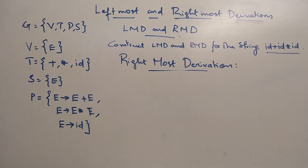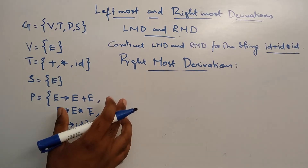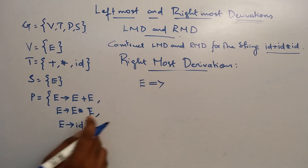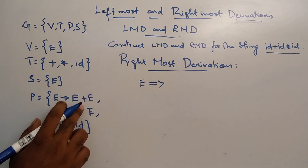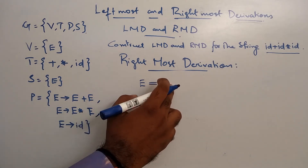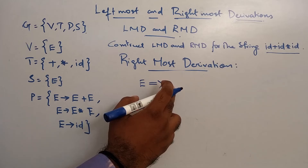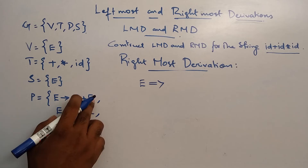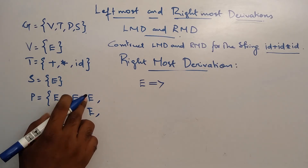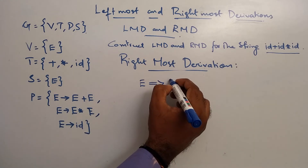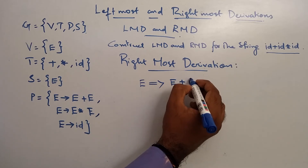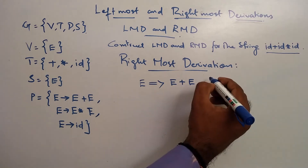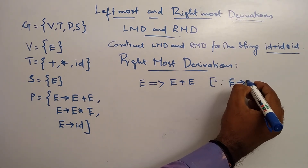Now we have rightmost derivation. When we start with derivation, we need to start with starting production E. E tends to — okay, more options are E plus E, E star E, or ID directly. So we can start with production E plus E, because we have a production like this.